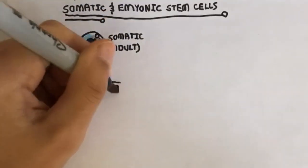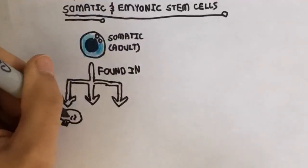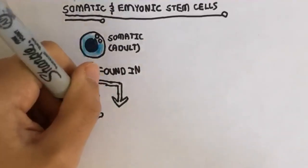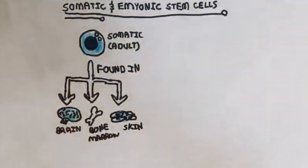They are found in the brain, skin, and bone marrow. Embryonic stem cells, meanwhile, are found in developing embryos, and they have even more potential.